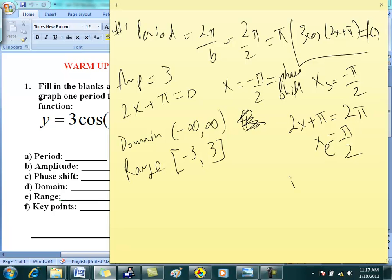Next, you need the increment, okay? And the increment, if you remember your formula, was period over 4. And period, we agreed, was π. So your increment is π/4.